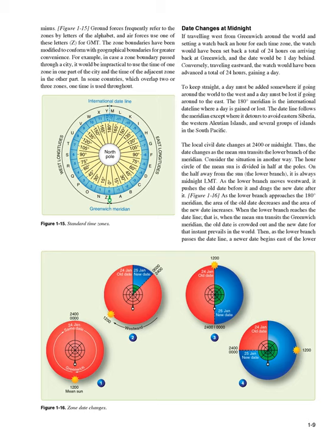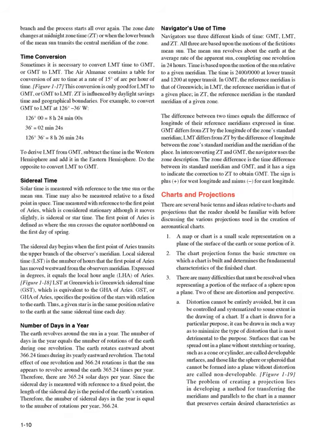When the lower branch reaches the dateline — that is, when the mean sun transits the Greenwich meridian — the old date is crowded out and the new date prevails. The zone date changes at midnight zone time (ZT), or when the lower branch of the mean sun transits the central meridian of the zone. Time Conversion. Sometimes it is necessary to convert LMT to GMT or GMT to LMT. The air almanac contains a table for conversion of arc to time at a rate of 15 degrees of arc per hour of time. To derive LMT from GMT, subtract the time in the western hemisphere and add it in the eastern hemisphere. Do the opposite to convert LMT to GMT.